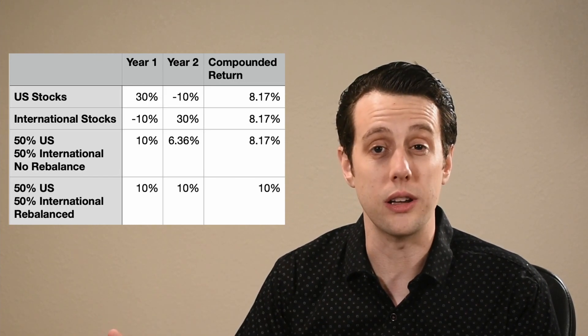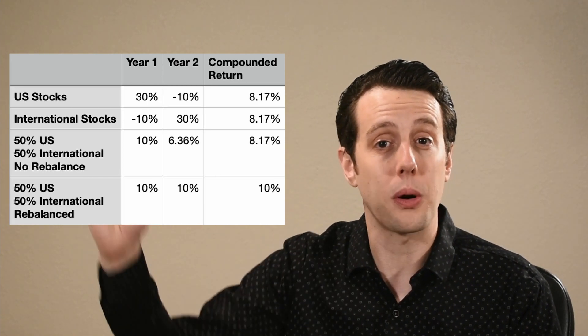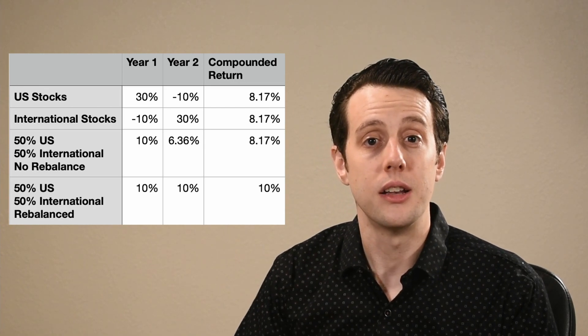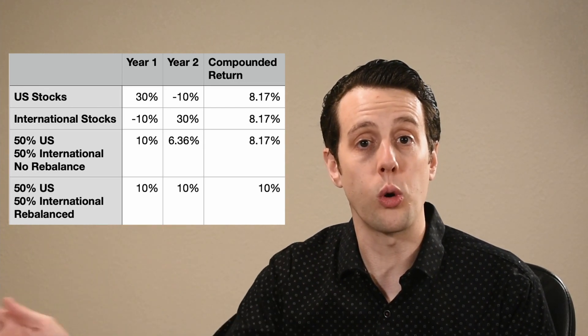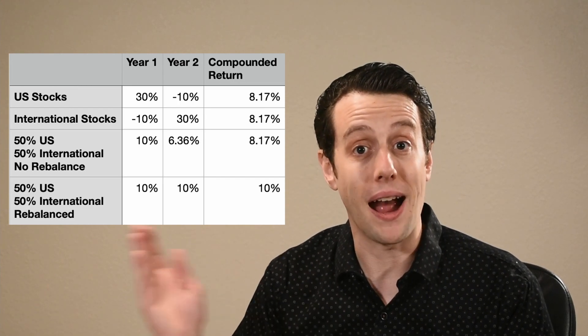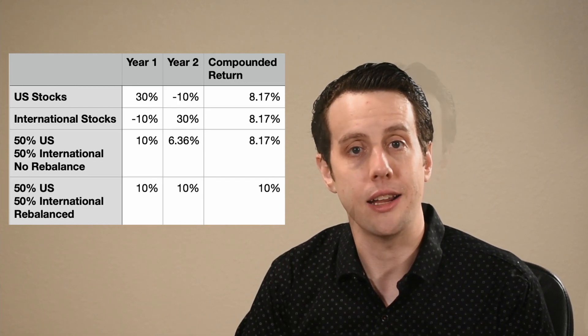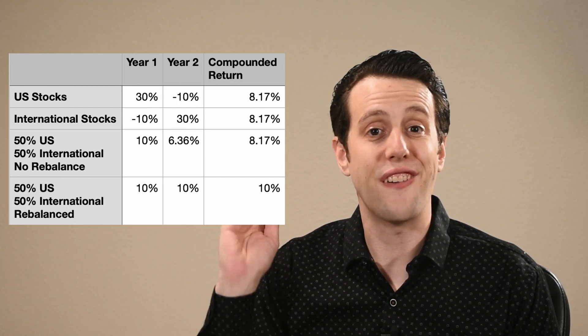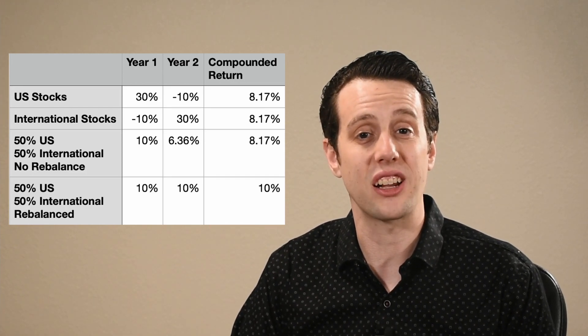It may seem counterintuitive to sell your best performing assets each year to buy the lower performing assets. But this is effectively buying low and selling high. This concept is the foundation of multi-asset class investing. If the investments move in different directions like this example, this diversification and rebalancing can increase your returns with less risk.